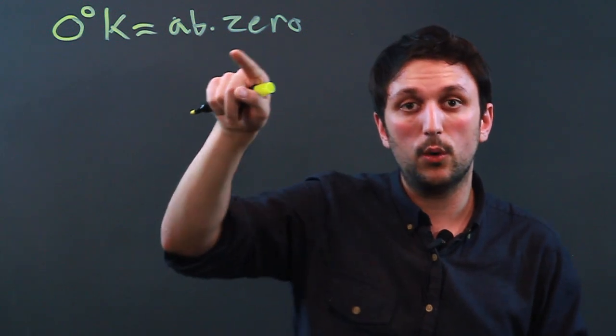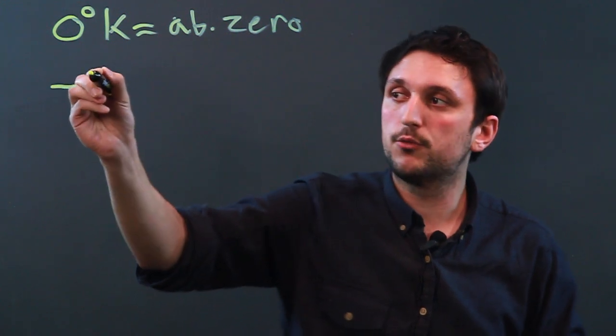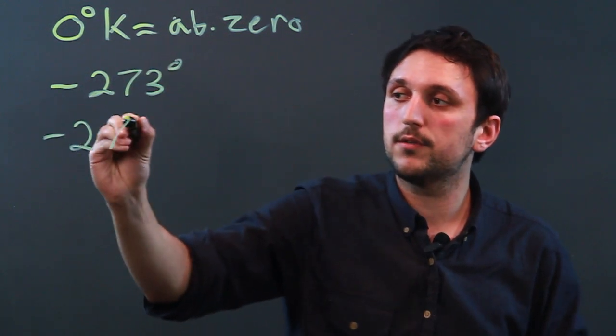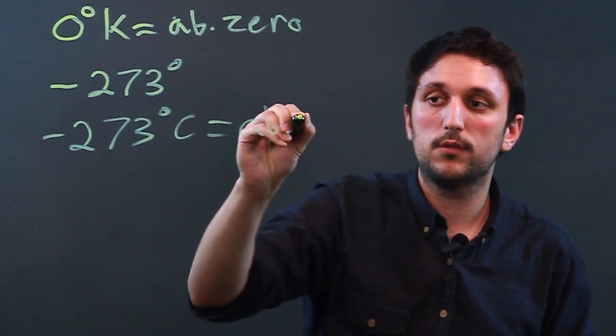Absolute zero is the lowest temperature. So if we want to convert to Celsius, we subtract 273 degrees because negative 273 degrees Celsius equals absolute zero.